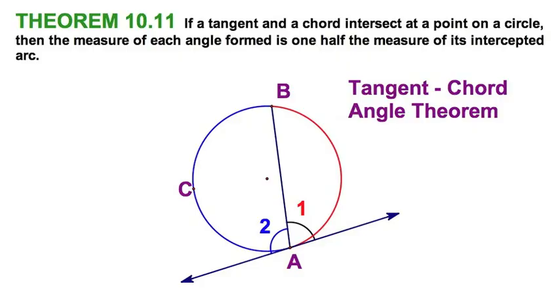Because I've got a tangent to the circle, tangent at the point A, and I have this chord, which happens to intersect the tangent at the point of tangency, forming what we call a tangent chord angle.